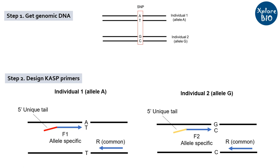The red color tail in F1' is complementary to fluorescent probe FAM, while the yellow color tail in F2' is complementary to the HEX fluorescent probe. Just remember that the fluorescent probes are initially quenched and do not emit fluorescence. It is only after a few rounds of PCR amplification that the sequence complementary to the probes gets incorporated, and the probe becomes free from the quencher and emits fluorescence upon binding to DNA.